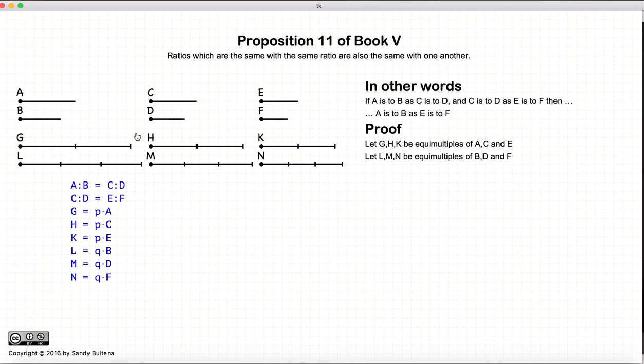We draw another three lines, l, m, and n. And again, l, m, and n will be equal multiples of b, d, and f.